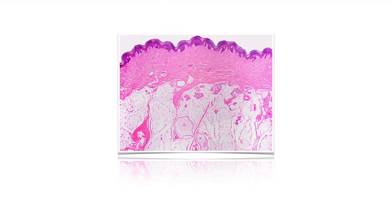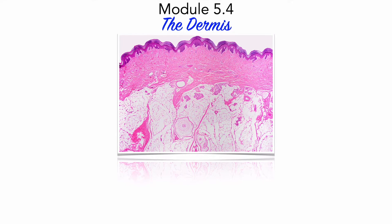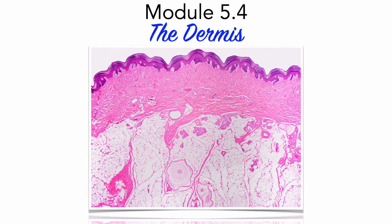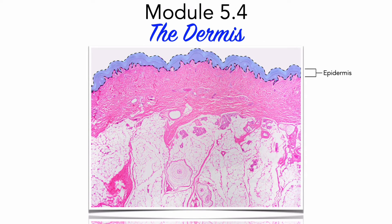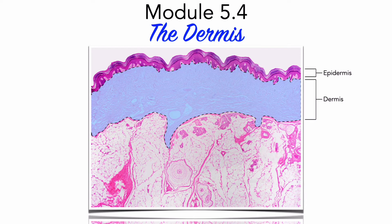The integument is a cutaneous membrane. As with all tissue membranes, cutaneous membranes consist of connective tissue lined with epithelial tissue. In earlier lessons of module 5, we examined the epithelium of the integument, namely the epidermis. The epidermis is called such because it sits above or on top of a layer of connective tissue called the dermis. It is to the dermis that we turn our attention in module 5.4.